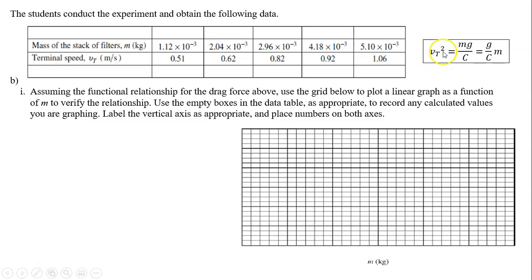The vertical is vt squared because that will give us the slope equals g over c, which should be a straight line. Since vertical is vt squared, we need to fill in the data table as vt squared, simply square the vt to get vt squared value. So those are the values. Now we need to label and put the numbers on the axis.